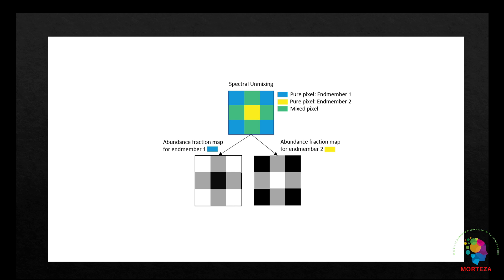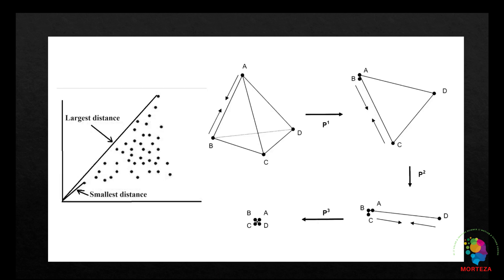In this video, I want to talk about the maximum distance, or Max-D, which is an automated algorithm to find the spectral end members from hyperspectral image cubes. This method relies on the idea that the end members are assumed to be the vertices of the best fitting simplex that encompasses the data.